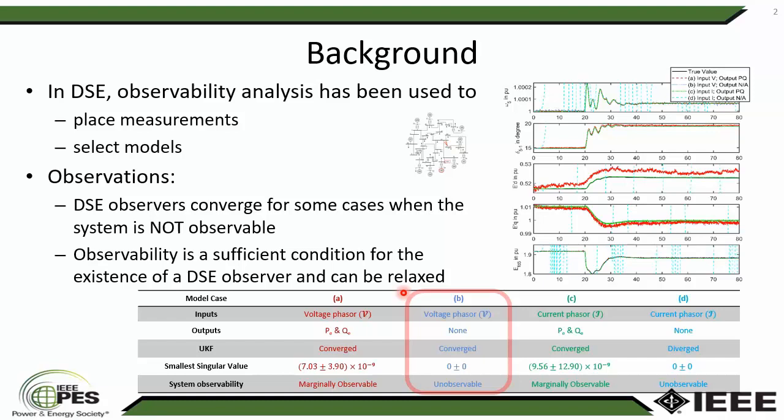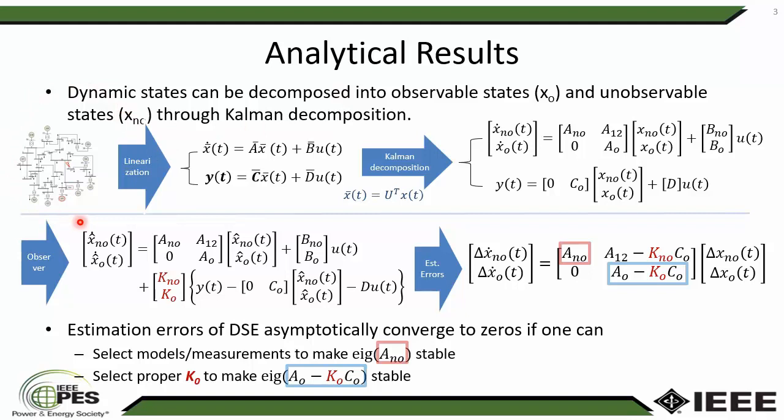We have a power system dynamic model. We can linearize it into a state space model, and then apply canonical decomposition to decompose the original states into states that are observable and states that are not observable. Based on that, we can construct an observer, and from those two models we can find their difference, which is the estimation error. This is the estimation error model.